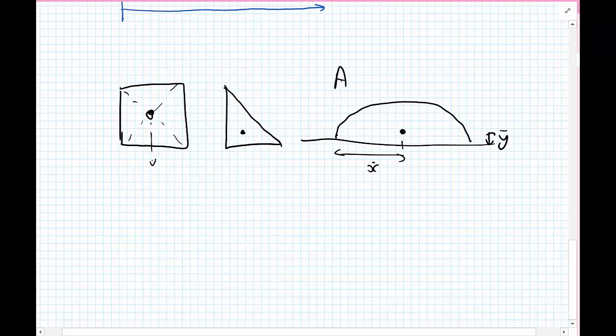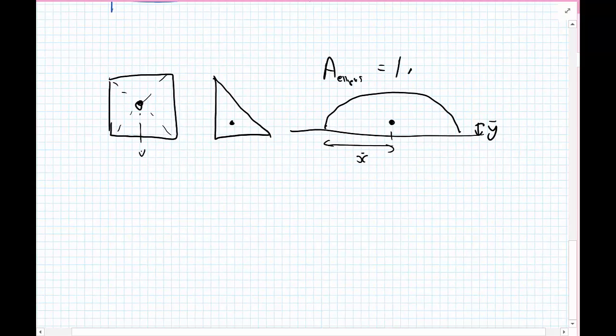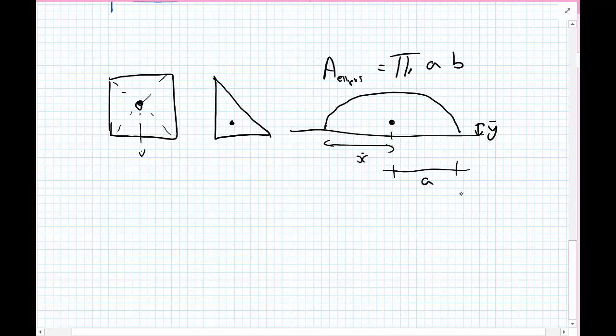The area of an ellipse, and this is completely off the top of my head, is pi times a times b, where a is the half length and b is the total height of an ellipse.